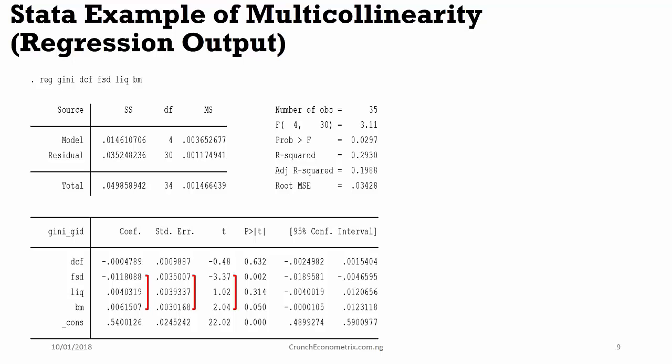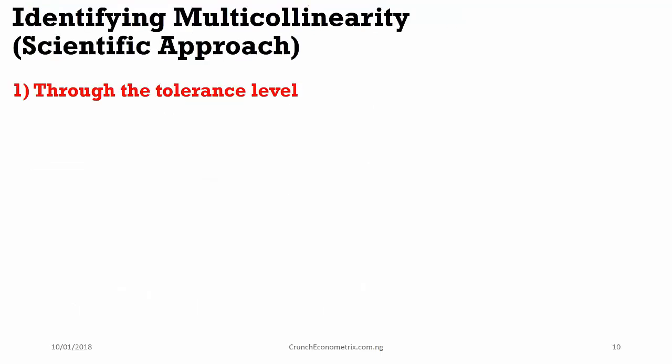In cases where multicollinearity is severe, the t-ratios will be very low. Now, how can we identify multicollinearity using a scientific approach? One of such approaches is through the tolerance level.